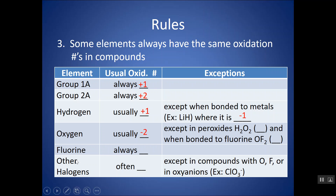Oxygen is usually minus two, except in peroxides. In a peroxide, the charge of O2²⁻ is two minus, so each O would have a minus one charge, sharing that minus two. Oxygen is also an exception when bonded to fluorine — since fluorine always has to be minus one, that would force the oxygen to be plus two to balance the charge.